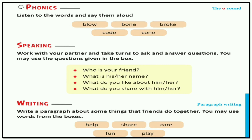Paragraph writing - write a paragraph about some things that friends do together. You may use words from the box: help, share, care, fun, play.